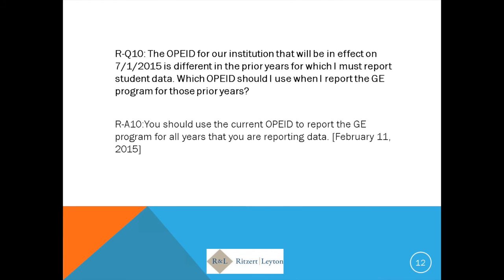This slide shows a Q&A posted to the department's IFAP website addressing institutions that may have had two different OPE IDs during the reporting period — perhaps because of a merger, combination, or acquired site. If that applies to you, the department wants you to use your current OPE ID to report the GE program for every single year being reported, even if in 2008-09 you were actually a different OPE ID number.